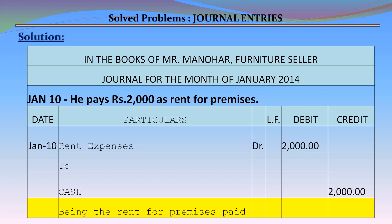January 10 – He pays Rs. 2,000 as rent for premises. Journal entry: Rent Expenses debit Rs. 2,000 to Cash Account credit Rs. 2,000, being the rent for premises paid.